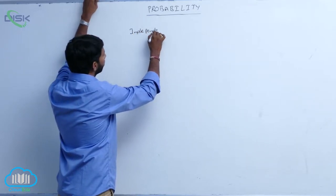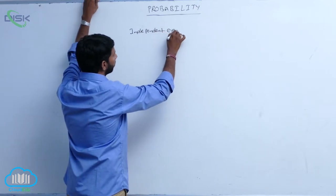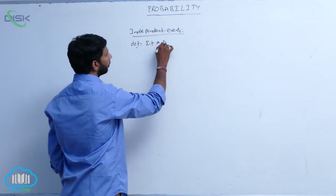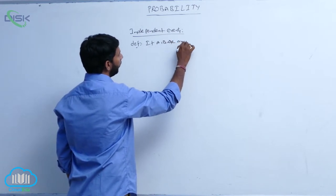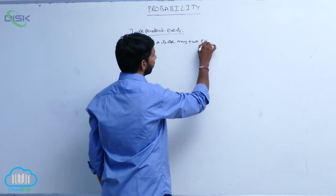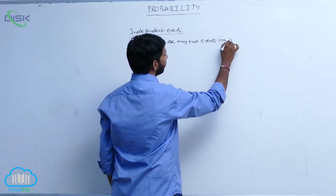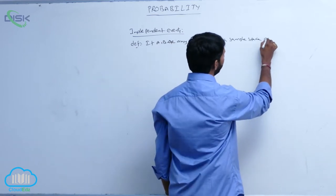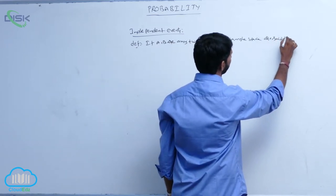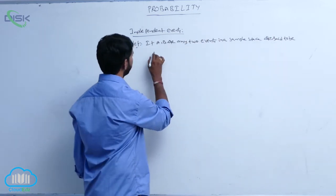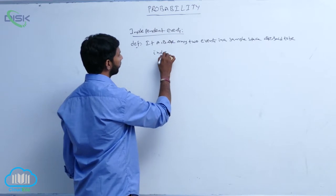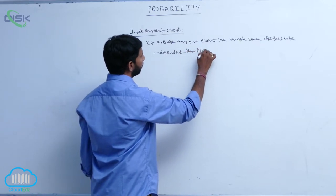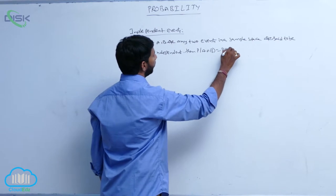Independent events. If A, B are any two events in a sample space, they are said to be independent. Then P of A intersection B is equal to P of A into P of B.